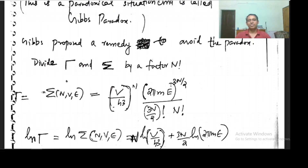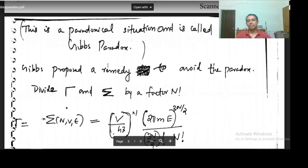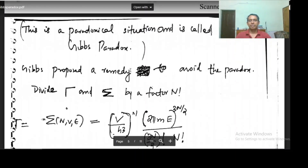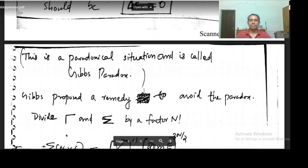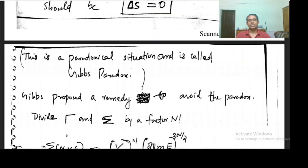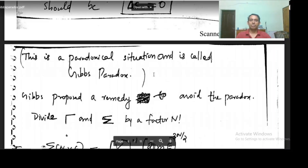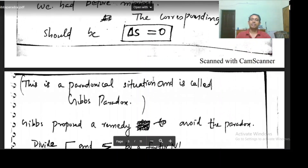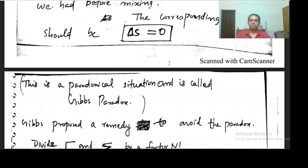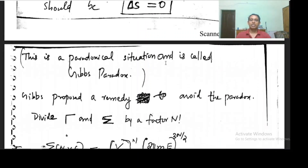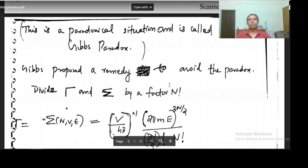Hi everybody. In the last video we were talking about Gibbs paradox, which is a paradoxical situation where we expect entropy change equal to 0, but we get entropy change as positive. And it was Gibbs who proposed a remedy to avoid, to overcome this paradox.